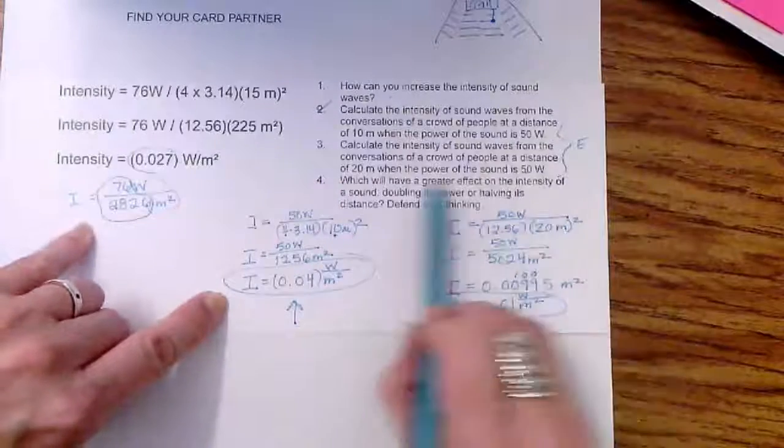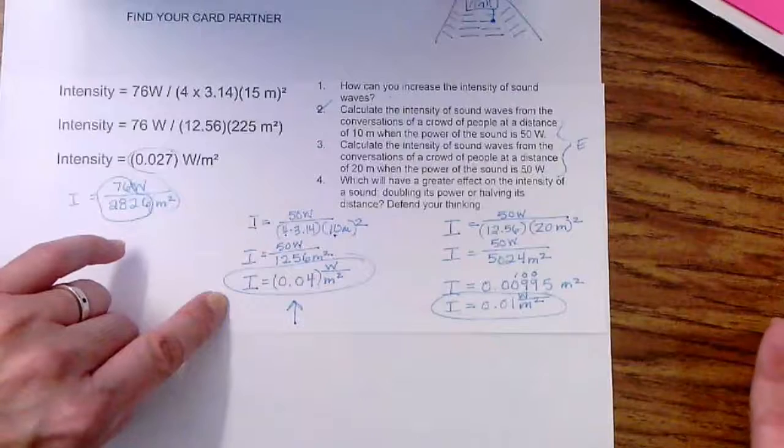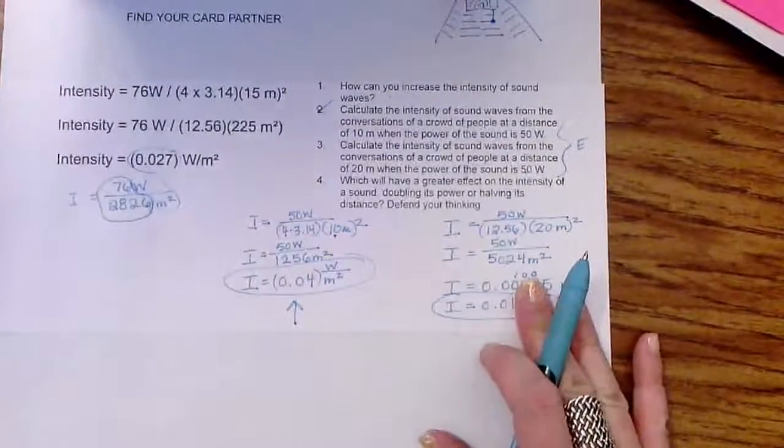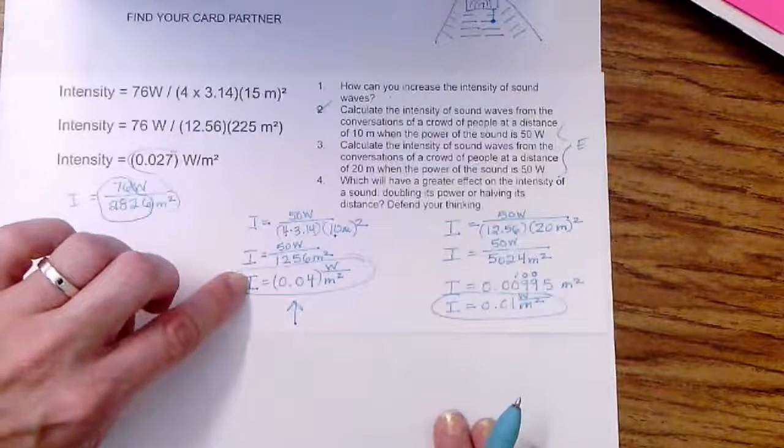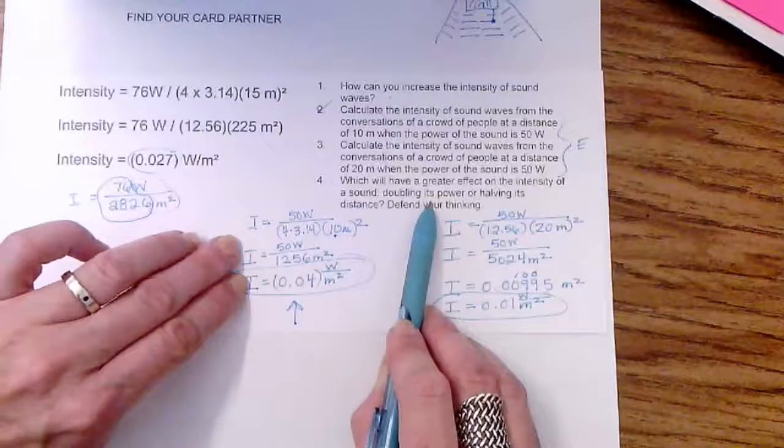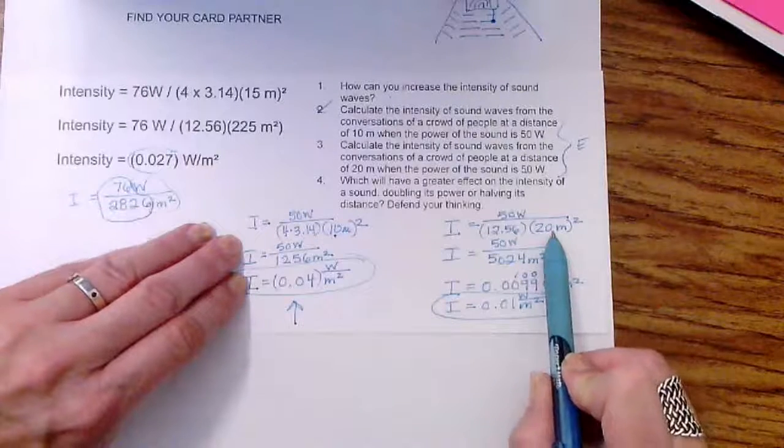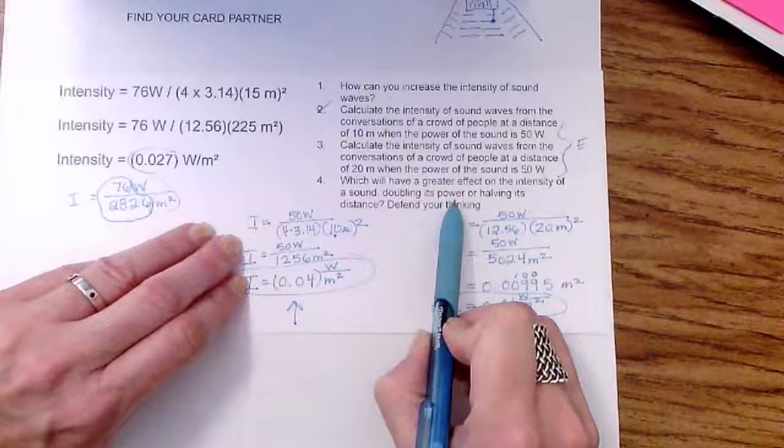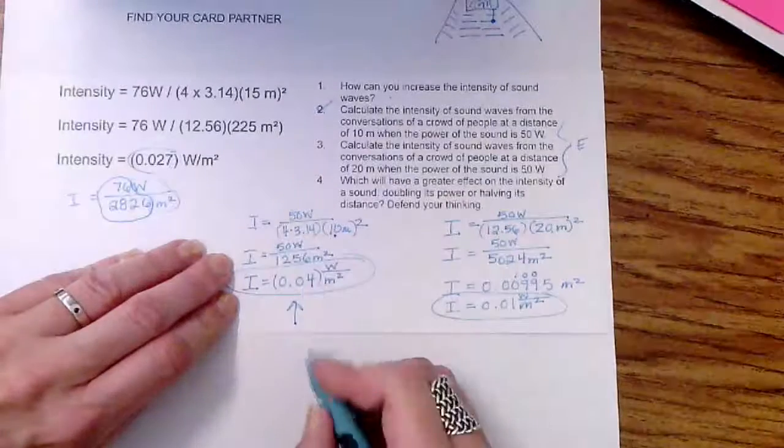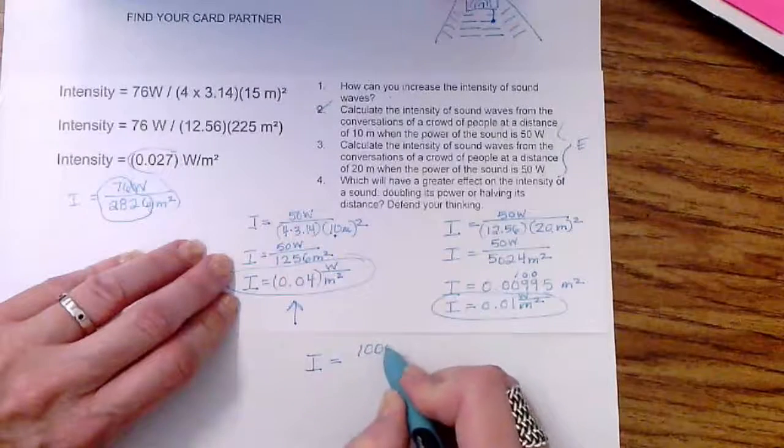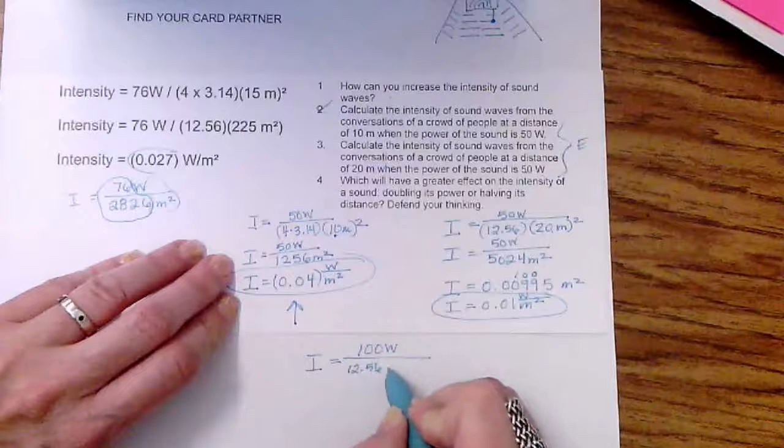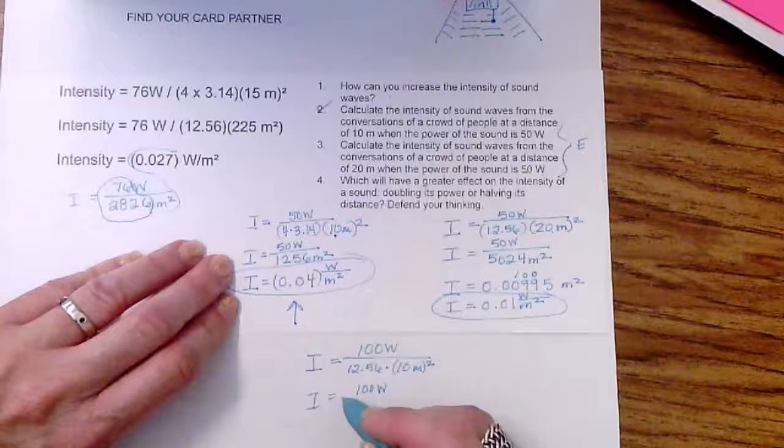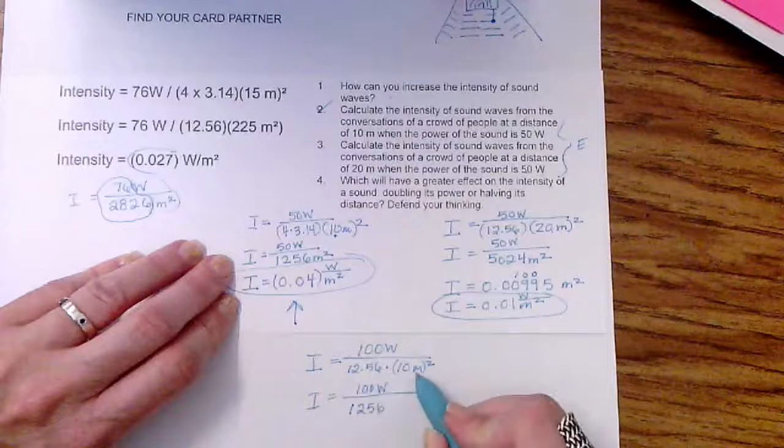When I want to write some reasoning, I can use this as a clue, which will have a greater effect on the intensity of a sound, doubling its power or cutting in half its distance. Here's another way that we can use math to defend our thinking. If I have this one and I know it is more intense, I can try some of these tricks. I can double the distance as I have done here. And now I want to see what would happen if I increase the power. So now we're going to double the power. So we're going to take the same equation. We're going to say intensity is equal to double the power, a hundred watts over twelve point five six times. We're going to keep that distance the same, 10 meters squared.